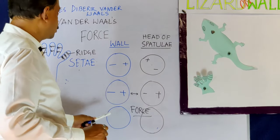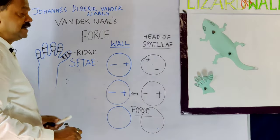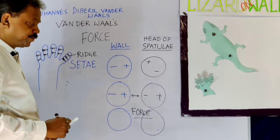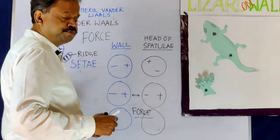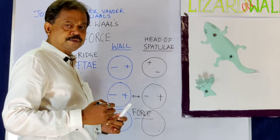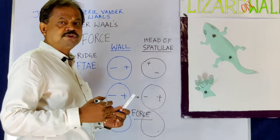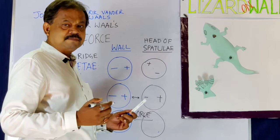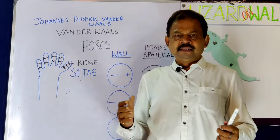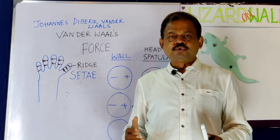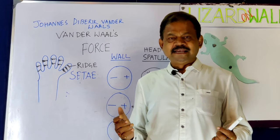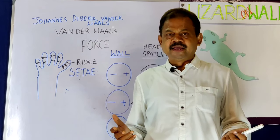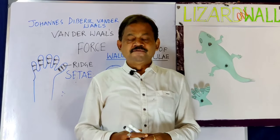Named after scientist Johannes Diderik van der Waals, this force is very weak individually, but because the number of spatulae is very large, the lizard can firmly attach to the wall or ceiling, move freely, and catch its prey.